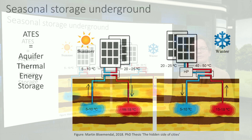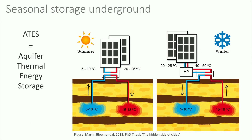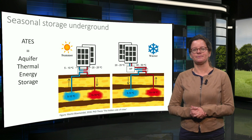In winter the reverse happens. Warm water from the warm well is extracted to be used for heating the building. Since the water stored usually has a maximum temperature of 25 degrees, a heat pump is used to further upgrade the temperature. The cooled groundwater is injected in the cold well again. On an annual basis, the heat and cold extracted must be in balance.